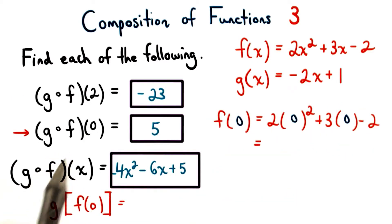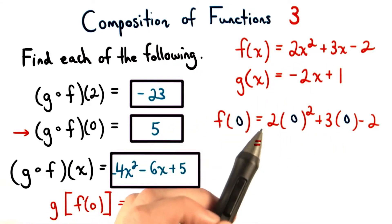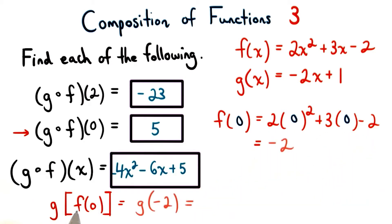For the second problem, we want to find g of f of 0. So we start by finding f of 0. We let x equals 0 for the function f, and then when we solve this or simplify it, we get negative 2. So we know f of 0 equals negative 2.